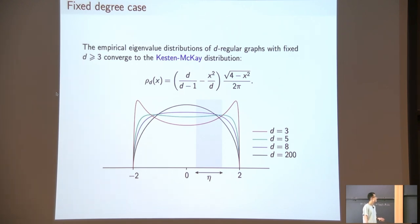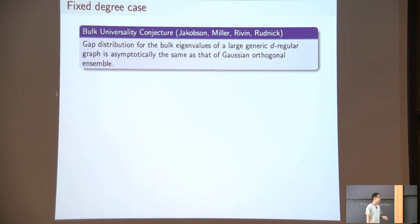But for fixed d, although the empirical distribution is very different from the semicircle distribution from the Gaussian orthogonal ensemble, it's still believed that the universality is true. It's formulated as a conjecture by Jacobson, Miller, Rivin, and Rudnick, that the gap distribution for bulk eigenvalues for large generic d-regular graph, this quantity shows asymptotically the same as the Gaussian orthogonal ensemble.